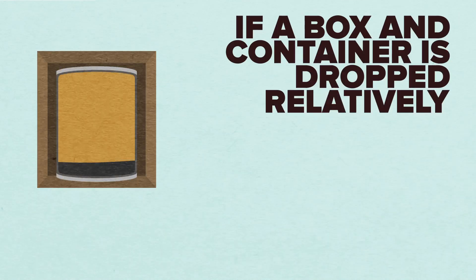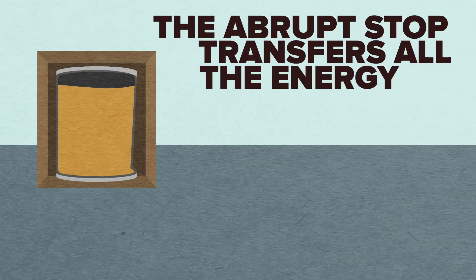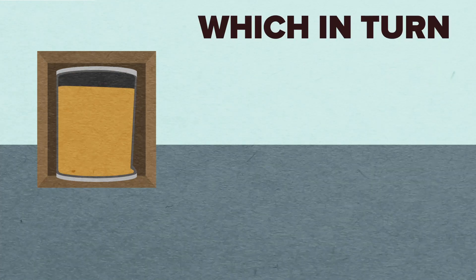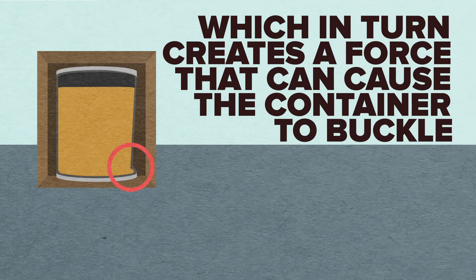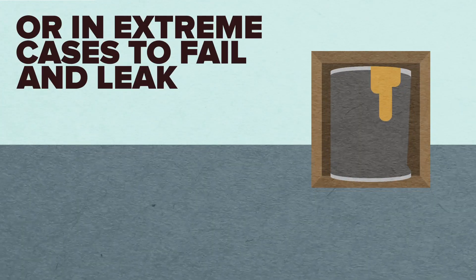If a box and container is dropped relatively flatly, the abrupt stop transfers all the energy to the liquid, which in turn creates a force that can cause the container to buckle or in extreme cases to fail and leak.